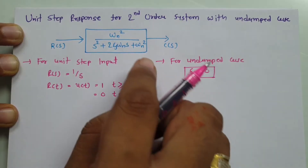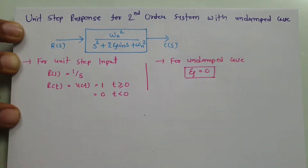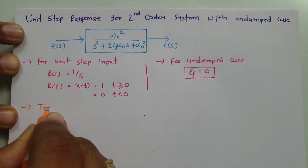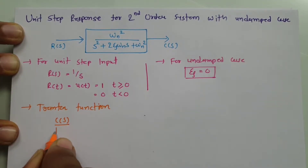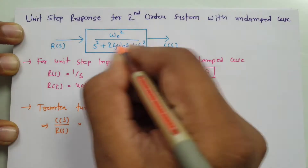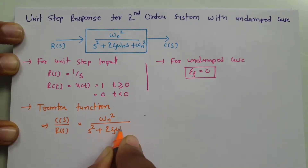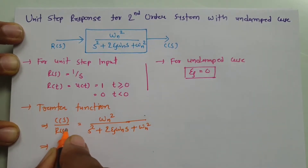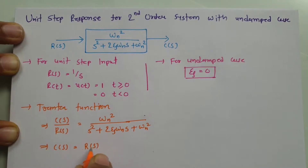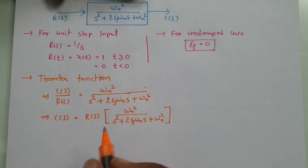Now I will apply both of these to the system and see what the output response will be. To get the output response, I need the transfer function of the system. Transfer function is the ratio of output divided by input, which equals omega_n squared divided by s squared plus 2 zeta omega_n s plus omega_n squared. So C(s) equals R(s) into the system transfer function.